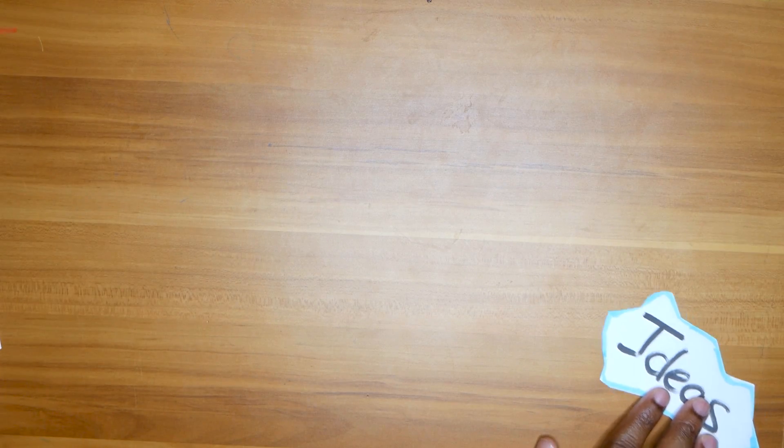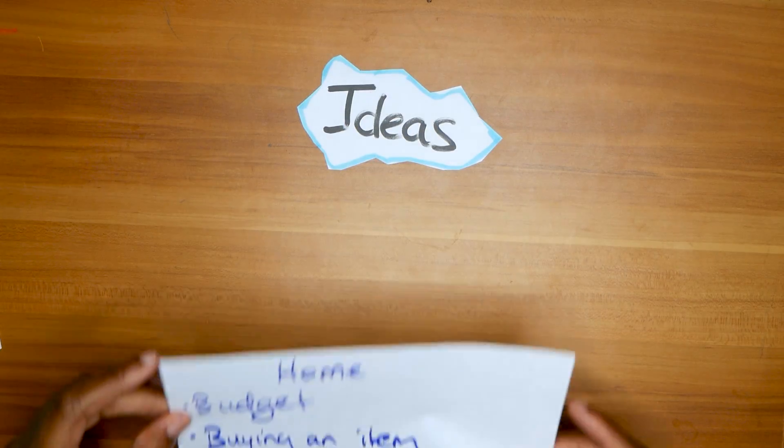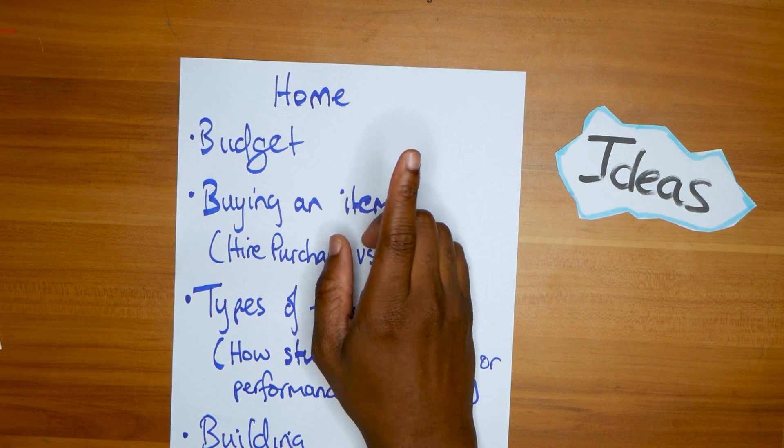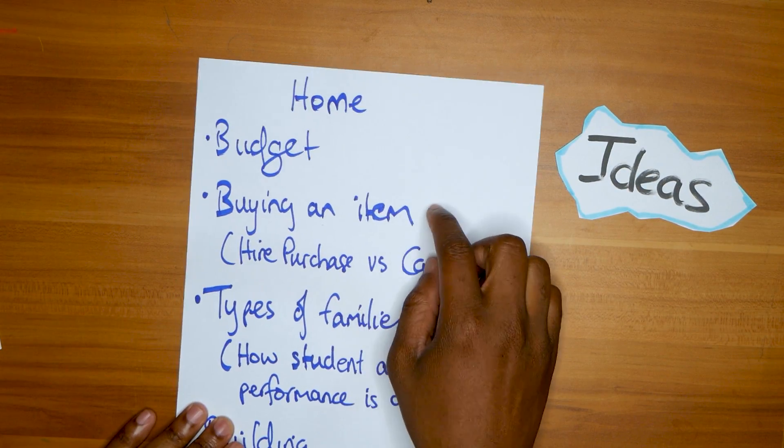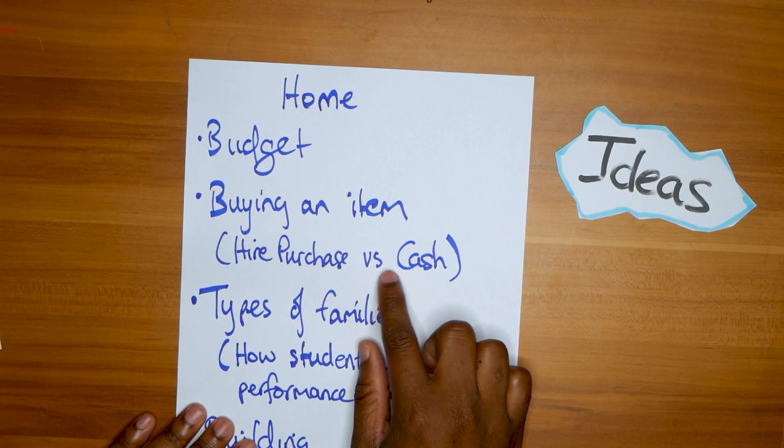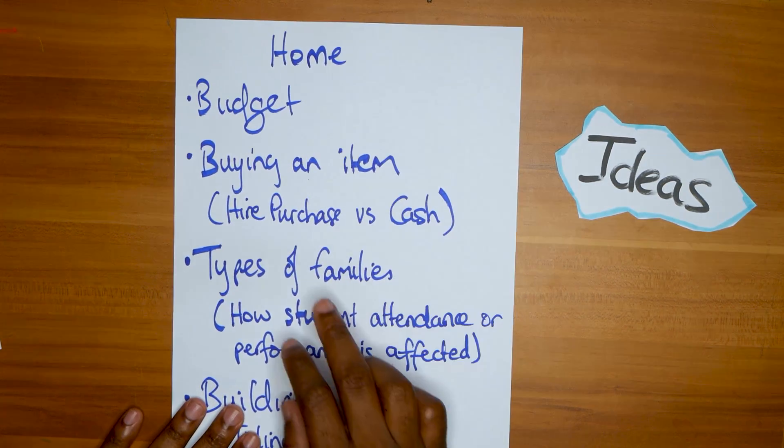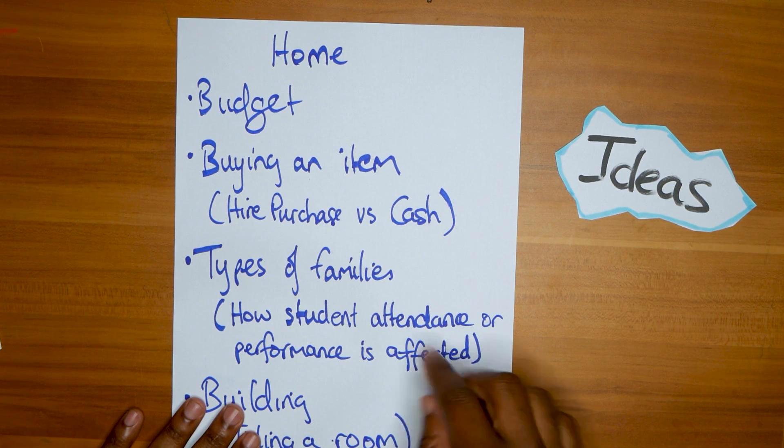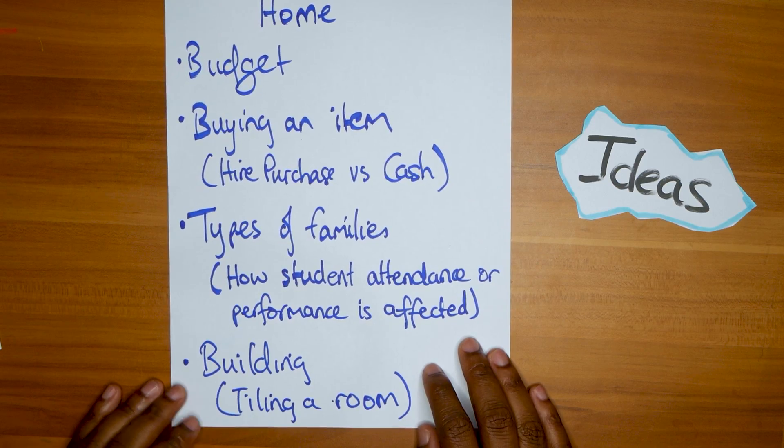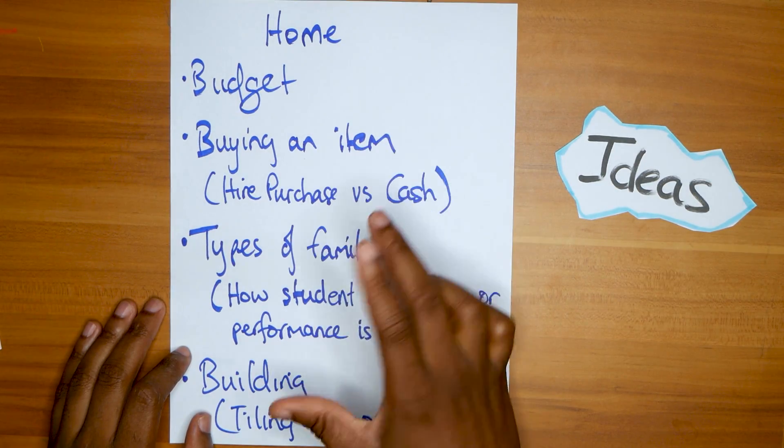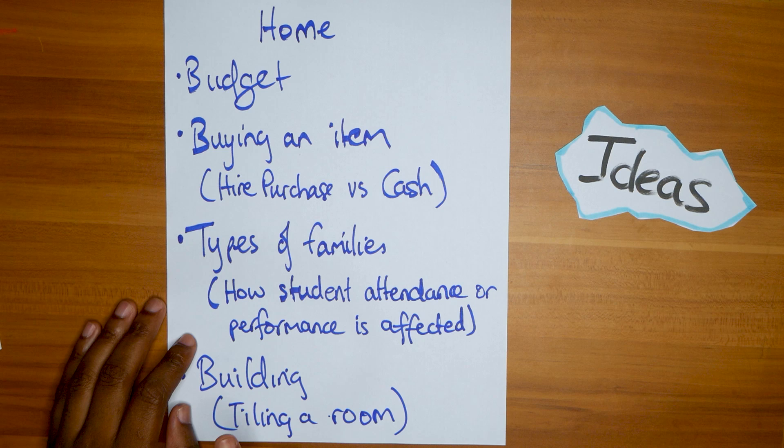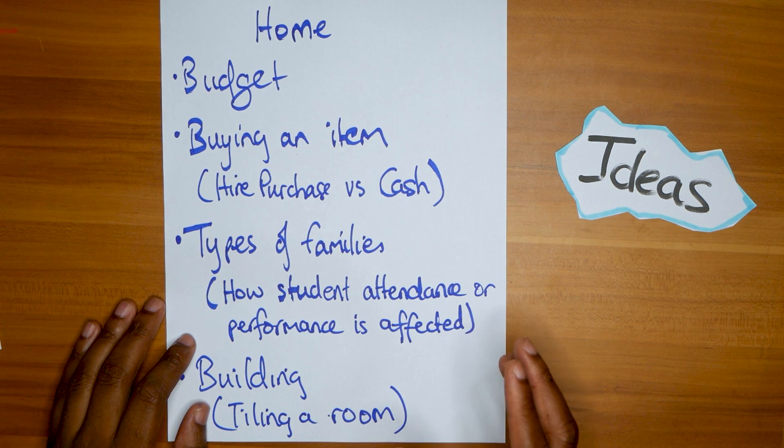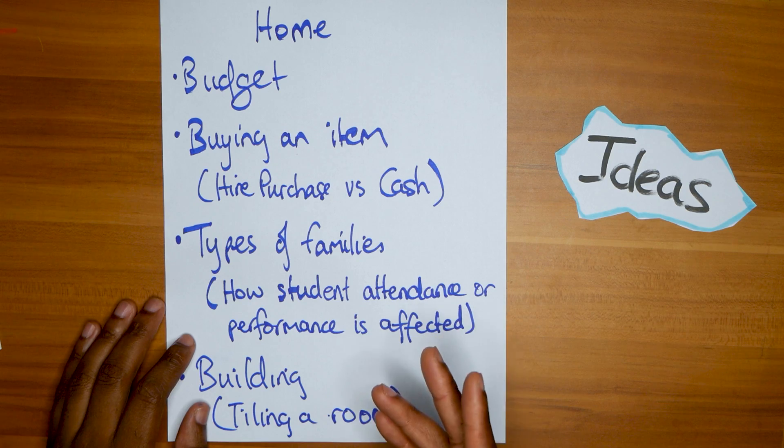Let's look at some actual ideas for your project. If you're looking at it from a home point of view, you can either do something with budget, that's consumer arithmetic, buying an item, maybe an item that requires hire purchase versus cash. Look at types of families and how students' attendance or performance is affected, whether it's single parent, extended, or nuclear.